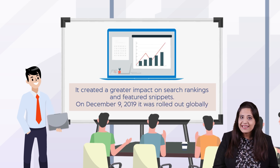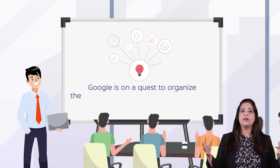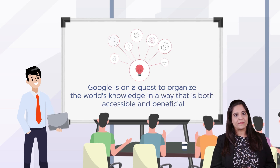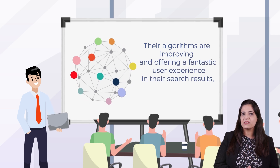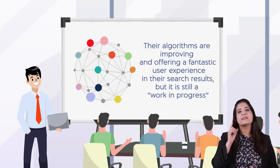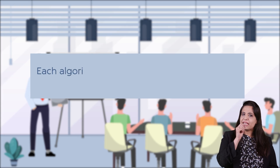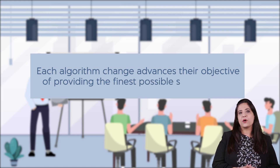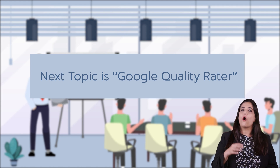On December 9, 2019, BERT was rolled out globally. Google is on a quest to organize the world's knowledge in a way that is both accessible and beneficial. Their algorithms are improving at offering a fantastic user experience in their search results, but it is still a work in progress. Mr. Weston concluded the meeting by stating that each algorithm change advances their objective of providing the finest possible search results. He then briefed everyone about the next meeting on Google Quality Rater.